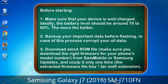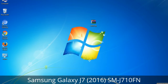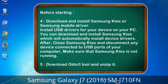3. Download the stock ROM file. Make sure you download the right firmware for your phone's model number from Sammobile or Samsung Updates, and unzip it only one time. The extracted firmware file has a *.tar.md5 extension. 4. Download and install Samsung KIES or Samsung mobile driver to install USB drivers for your device on your PC. After installation, close Samsung KIES and disconnect any device connected to USB ports — make sure Samsung KIES is not running. 5. Download the Odin 3 tool and unzip it.